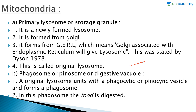The second kind is the phagosome or pinosome, also called the digestive vacuole. The original lysosome unites with the phagocytic or pinocytic vesicle and forms a phagosome. In this phagosome, the food is digested.